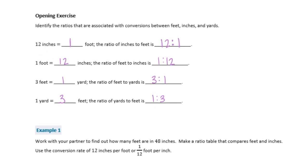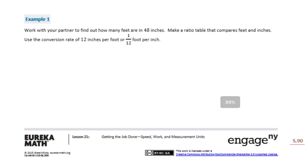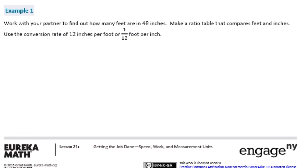Example 1. Work with your partner to find out how many feet are in 48 inches. Make a ratio table that compares feet and inches. Use the conversion rate of 12 inches per foot or 1 twelfth foot per inch. So we want to know how many feet are in 48 inches. And it says to use the conversion rate of 12 inches per foot or 1 twelfth foot per inch. So we have 48 inches and we want to make that into feet.